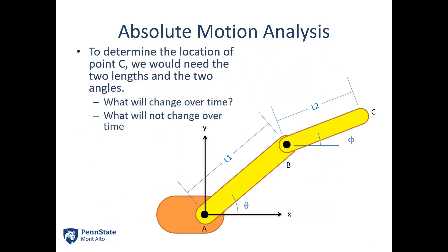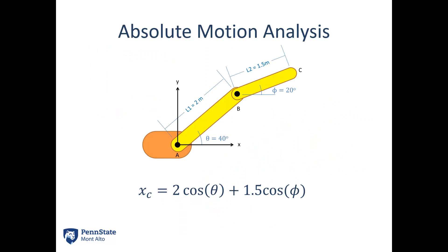Looking at a robotic arm from the top, the arm can rotate at point A and point B. The things that will change over time are the angle theta and the angle phi. What doesn't change are L1 and L2 — the lengths of the arm remain constant. Putting in some values, the equation for the x position of point C would be 2 cosine theta plus 1.5 cosine phi. The 2 and 1.5 are the constant lengths written as numbers, while theta and phi are variables. Similarly, the y position would be 2 sine theta plus 1.5 sine phi. This gives the x and y position of point C with respect to the ground point A at the origin.